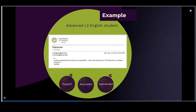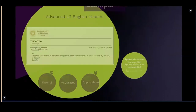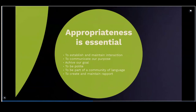So her purpose is obviously that I do a favor for her, and this is not pragmatically appropriate. We see that even when students have an advanced level of the language, they can still lack pragmatic appropriateness. Appropriateness is essential — it's essential to establish and maintain an interaction, to communicate our purpose, to achieve our goals, to be polite, and to be part of a community of language that accepts us. It's also essential to create and maintain the rapport we establish.